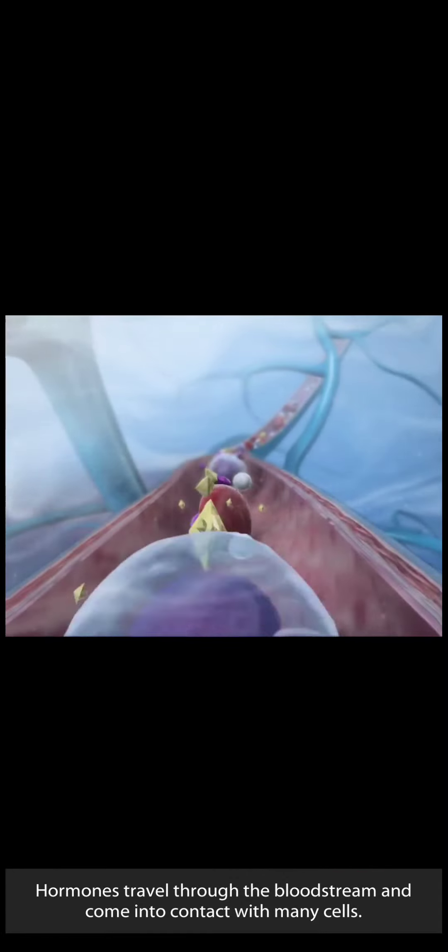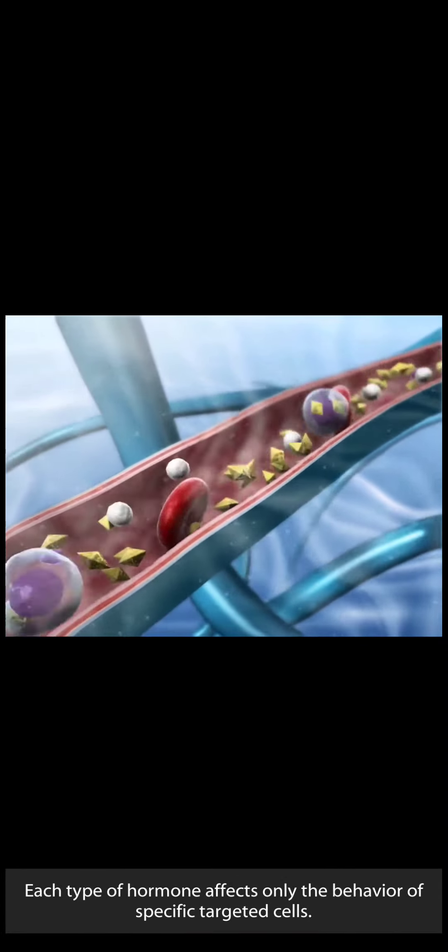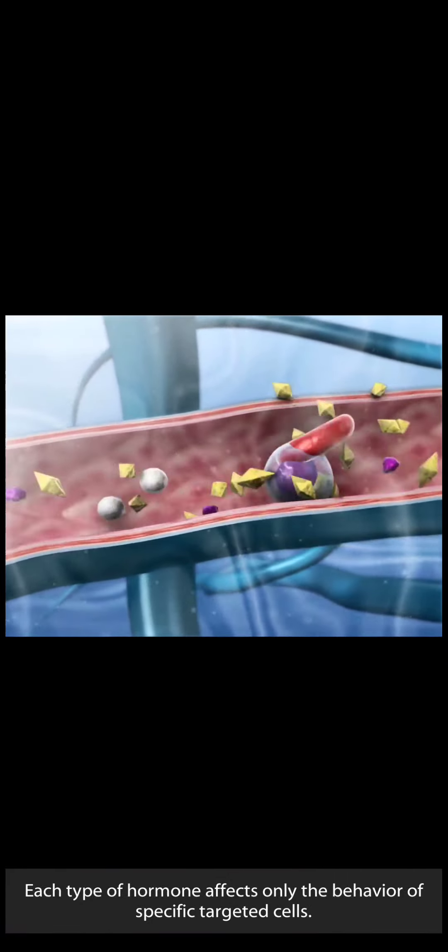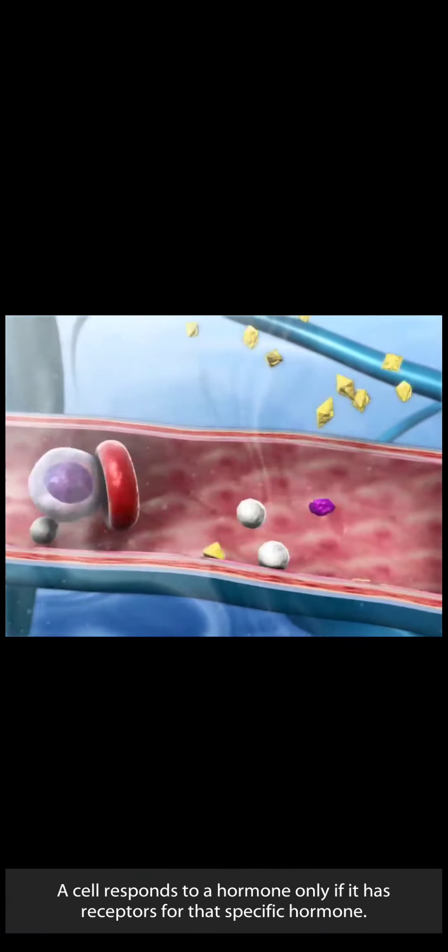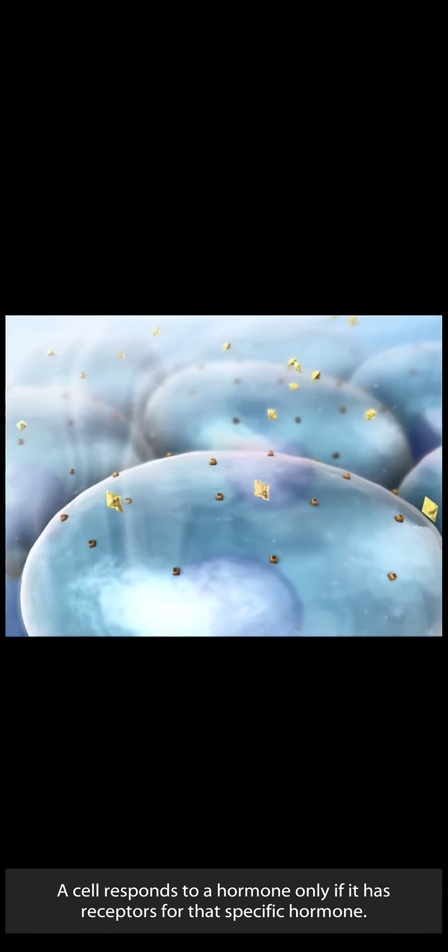Hormones travel through the bloodstream and come into contact with many cells. Each type of hormone affects only the behavior of specific targeted cells. A cell responds to a hormone only if it has receptors for that specific hormone.